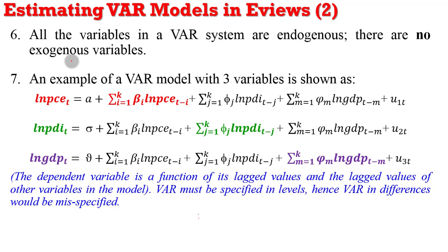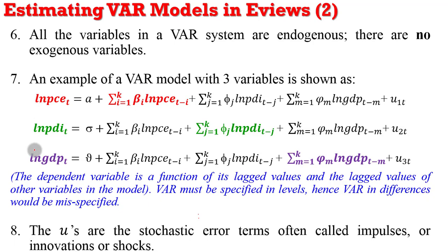One thing you have to also note is that your VAR must be specified in levels and not in first difference. You can see here, these are the level forms of specifying all these variables. Once you specify your VAR in differences, you have simply misspecified that model. Never specify your VAR model in first differences, only specify them in their level form. Again, the u's, which are the error terms here, are simply called impulses or innovations or shocks in the language of VAR.